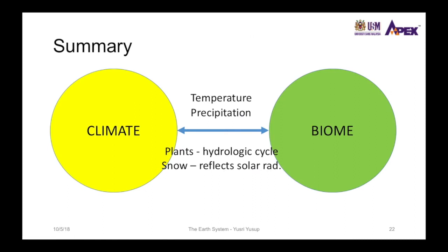In summary, the climate affects the biome by providing a set of temperature and precipitation conditions that favor a particular biome, but the biome also has an effect on the climate through processes such as photosynthesis and evapotranspiration, which affect the water or hydrologic cycle. Another example is surfaces covered by snow: due to the color white, snow reflects incoming solar radiation to space, lowering the overall energy absorbed by the surface, which can also affect the climate.